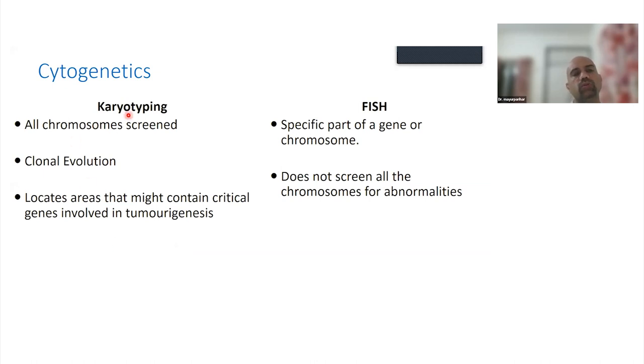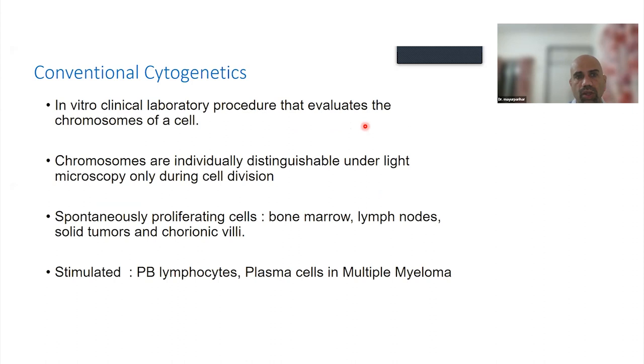Usually karyotyping and FISH are the routine techniques used in a diagnostic laboratory. Karyotype is the whole genome of a single cell. You can look at all the chromosomes, the whole genome, and identify if there is clonal evolution or multiple abnormalities. Whereas FISH will only answer the question you are asking. You use specific probes, and FISH will just give you that information - it will not give you information about what is happening at other parts of the genome.